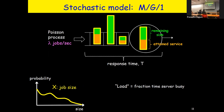One last piece of notation: load, denoted rho. Load refers to the average fraction of time the server is busy. It has a simple formula: rho equals the arrival rate times the mean job size. For example, if three jobs per second come in and each job on average takes a quarter of a second, then the server is busy three-quarters of the time. Load must be less than one so things don't explode.